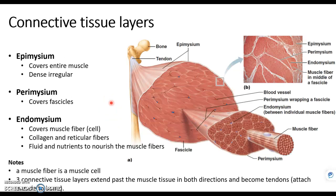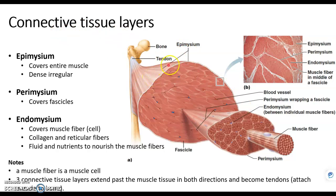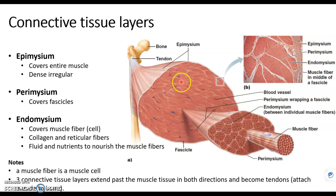Now let's organize skeletal muscle. Here's one large skeletal muscle — looks like a large thigh muscle because there's the femur. Your whole muscle is surrounded by a connective tissue layer called the epimysium. If we look inside a muscle, we see it's made up of small sections. Each little section is called a fascicle, and each fascicle is lined with connective tissue called the perimysium — peri meaning around.